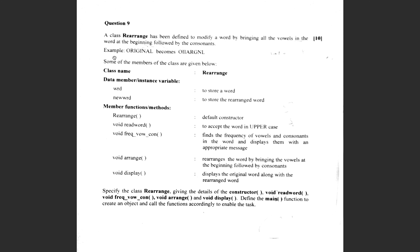The private data members are 'word' and 'newWord'. The class Rearrange has a default constructor. There is a void 'readWord' to accept the word in uppercase, and void 'freqVowelConsonants' to find the frequency of vowels and consonants in the word and display them with an appropriate message. There is also an arrange method to rearrange the word and display the original along with the rearranged word.